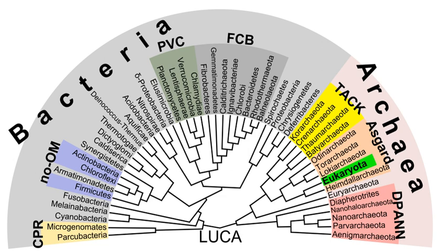Prokaryotes have diversified greatly throughout their long existence. The metabolism of prokaryotes is far more varied than that of eukaryotes, leading to many highly distinct prokaryotic types. In addition to using photosynthesis or organic compounds for energy, as eukaryotes do, prokaryotes may obtain energy from inorganic compounds such as hydrogen sulfide. This enables prokaryotes to thrive in harsh environments as cold as the snow surface of Antarctica or as hot as undersea hydrothermal vents and land-based hot springs. Some archaea and bacteria are extremophiles, thriving in harsh conditions such as high temperatures or high salinity.